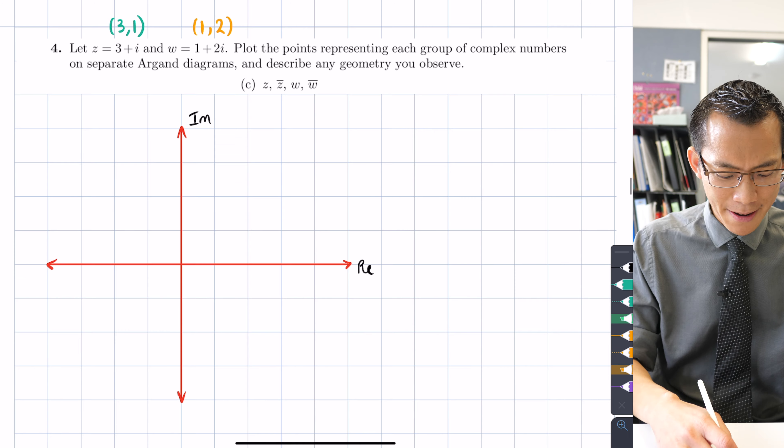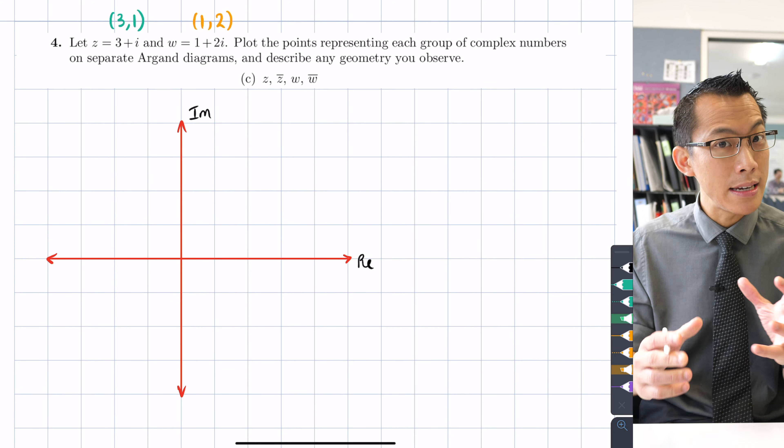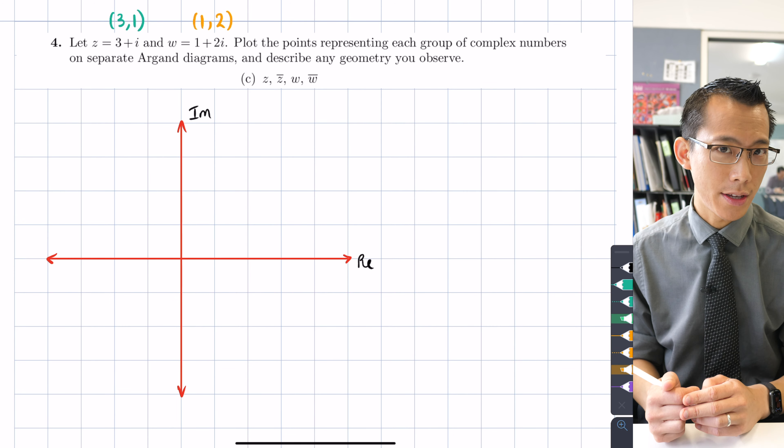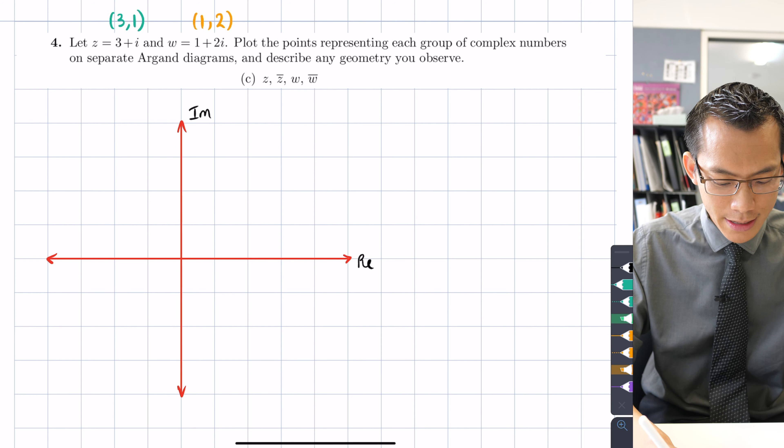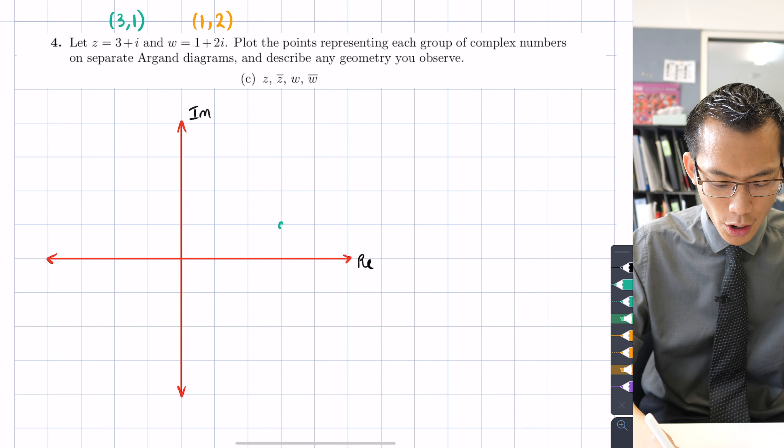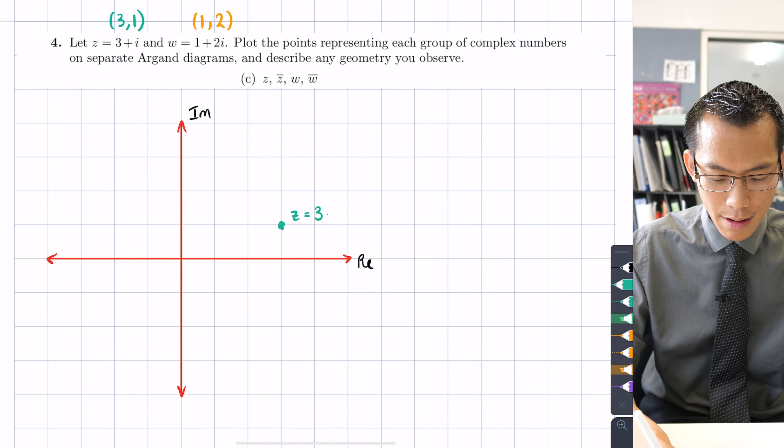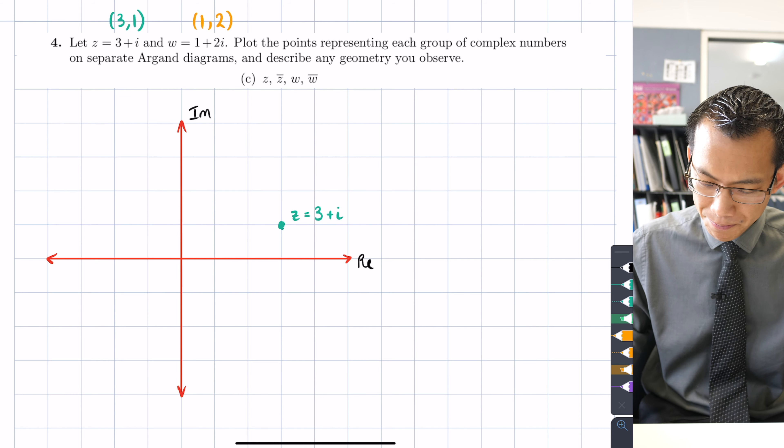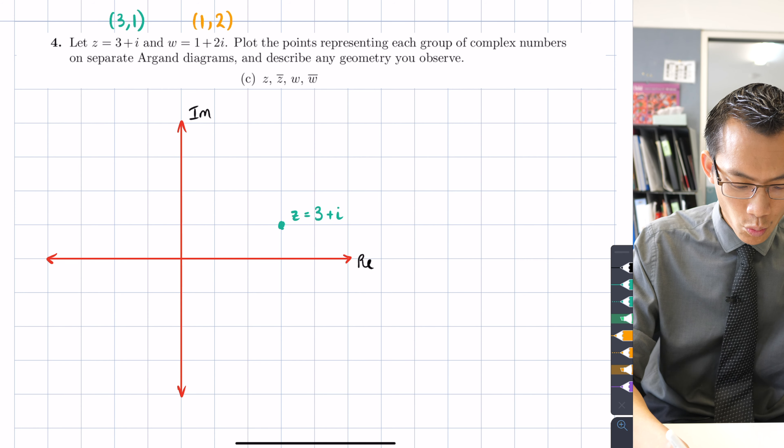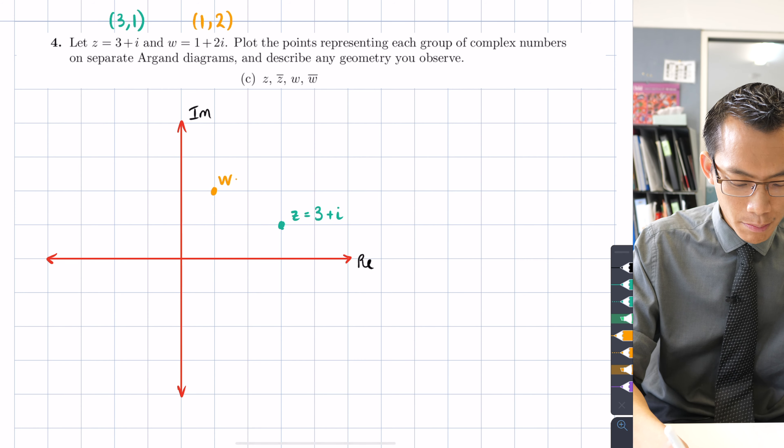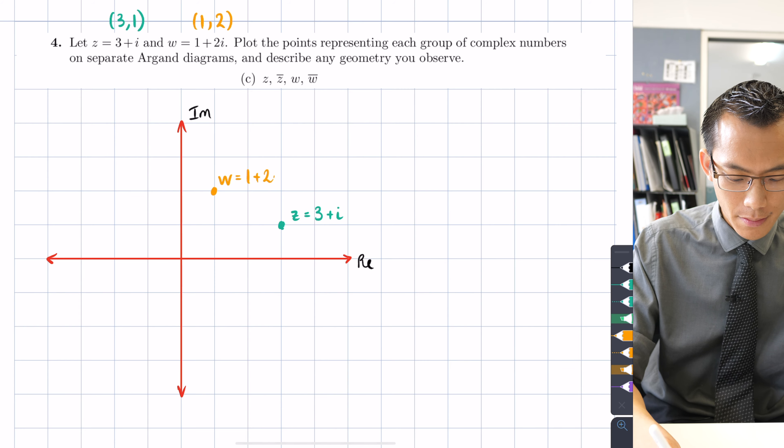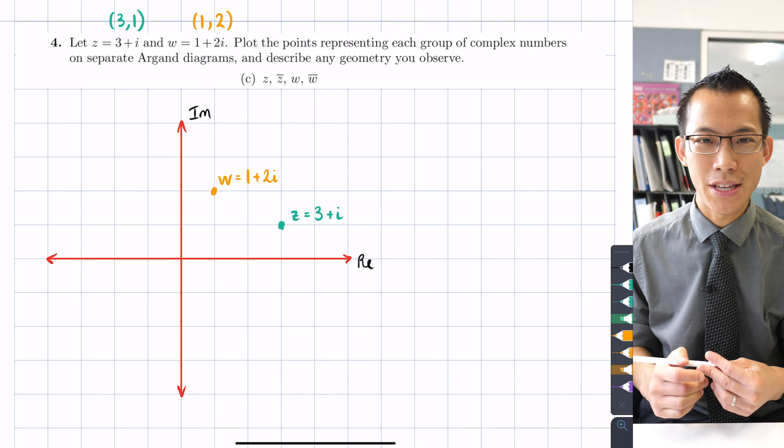I'm using a grid here but obviously if you just have lined paper it is really helpful if you get a set of consistent scales. I'm gonna have my z over here. I'm gonna label that accordingly z = 3 + i and then I'm gonna grab my w at 1 + 2i. So there are the points that are represented.